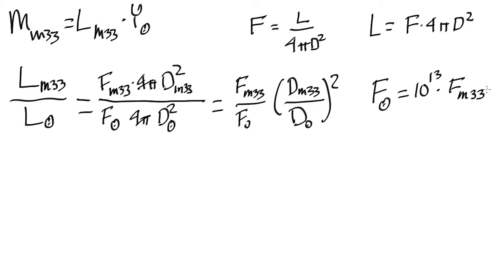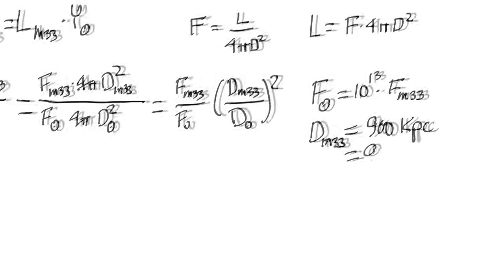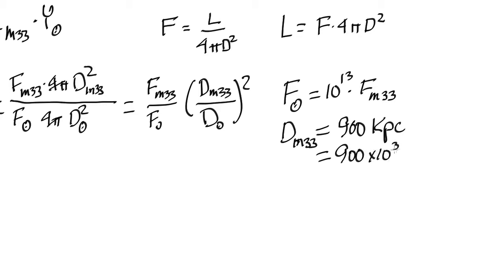The other thing we need to know is the distance to M33, so the distance to M33, as measured with the Hubble Space Telescope using Cepheid variable stars, is 900 kiloparsecs. Now a kiloparsec is 1,000 parsecs, so that's 900 times 10 to the 3 parsecs, and a parsec is defined as being 206,265 astronomical units.